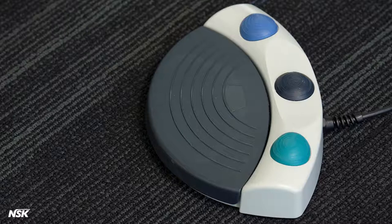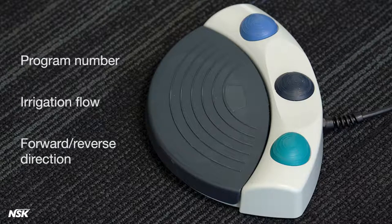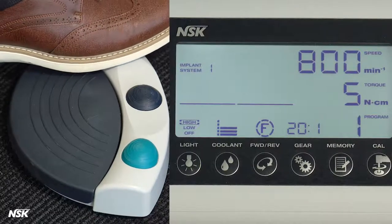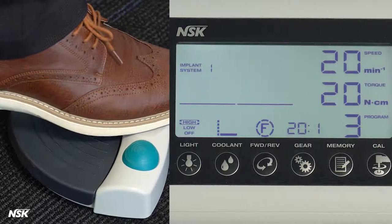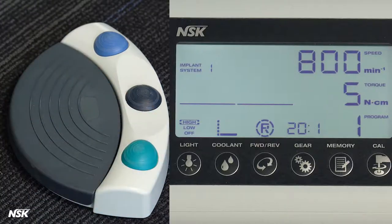The foot control allows you to choose the program number, change the irrigation flow, and switch between forward or reverse direction. The blue button on the foot control adjusts the coolant flow. The black button shuttles between your preset programs. The green button flips between forward or reverse.